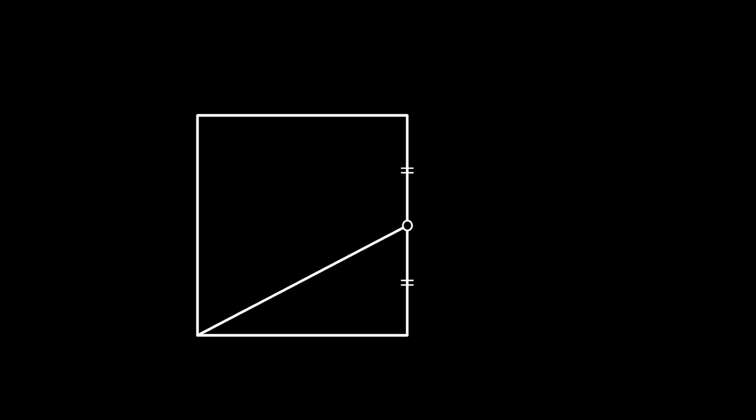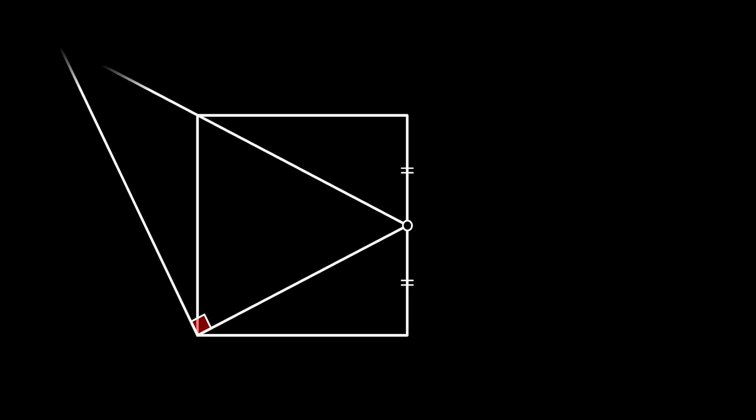We're going to start our problem with the square, then we're going to set the midpoint on the right side of the square, and we're going to connect this midpoint to the bottom left vertex of the square. From this vertex, we're going to pull a perpendicular to our previously constructed line, and we're going to connect this perpendicular line to the line which connects the same midpoint and goes through the upper left vertex of the square, as you can see on the sketch. And therefore, we have formed this really big right triangle.